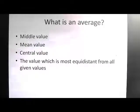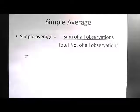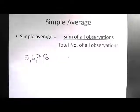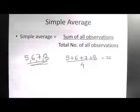Now all this is theoretical. Practically speaking, simple average is nothing but the sum of all the observations divided by the total number of observations. For example, if we are given the numbers 5, 6, 7, and 8, we simply add these four numbers and divide by 4. So 5 + 6 + 7 + 8 = 26, and 26 divided by 4 gives us 6.5.